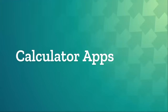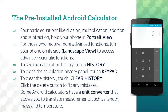We will now talk about the different calculator apps. The pre-installed Android calculator on an Android phone offers a Portrait View with four basic operations: division, multiplication, addition, and subtraction. To access more complex functions, turn your phone to landscape view for advanced scientific functions. To view calculation history, touch 'history' on your phone. To close the history panel, click 'clear history.' If you make a mistake, click the delete button. Some Android calculators also have a unit converter for measurements such as length, mass, and temperature.